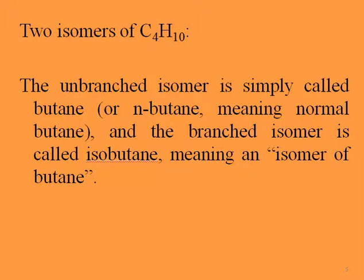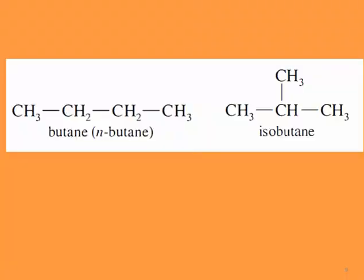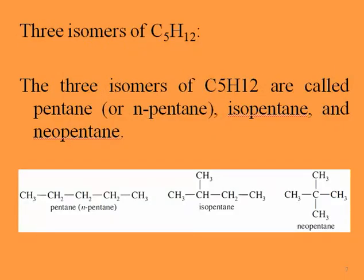Isomers have the same molecular formula but a different shape of chemical structure. So we have two isomers of butane: the left one is called normal butane or simply butane — it is unbranched — and on the right-hand side we have isobutane because it is the branched one.